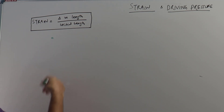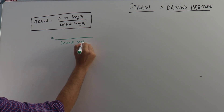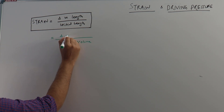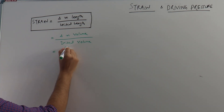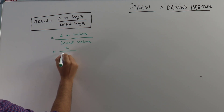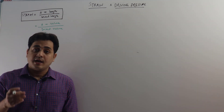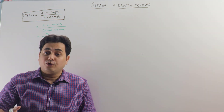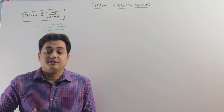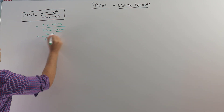Here what we are doing is we are giving a tidal volume to the lungs, and the lungs have some volume before you give the tidal volume — that is the initial volume. So the change in volume will be the tidal volume, because that is what we are giving to the patient, and the initial volume will be the FRC, or functional residual capacity. So the strain of the lung is tidal volume divided by FRC.